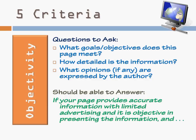The third criterion is objectivity. What goals or objectives does this page meet? How detailed is the information? What opinions, if any, are expressed by the author? If it's an objective webpage, you want to make sure that it doesn't contain bias — that it's presenting a point of view that's not one-sided, presenting all the facts and all of the information. Consider the purpose of the page and see if they present information with limited advertising. The text should be the most important thing on the page. If you can identify whether or not the page provides accurate information with limited advertising and its objective is presenting the information, then you've addressed the third criterion.